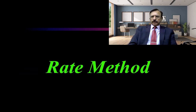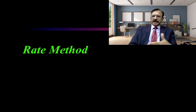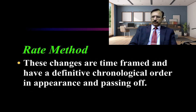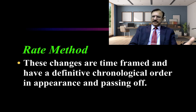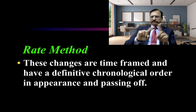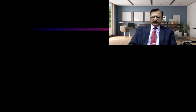The rate method is the study of the changes which appear in the dead body after death. These changes appear in a definitive chronological order of appearance and passing off. We study the body to determine what state the changes are in, and then place a time bracket — the post-mortem interval.